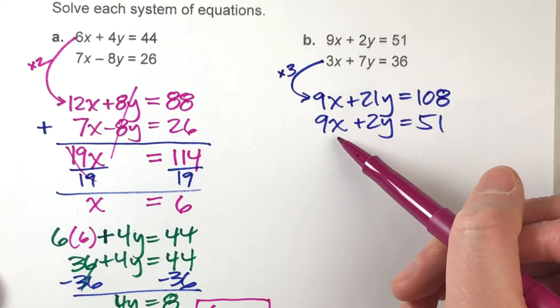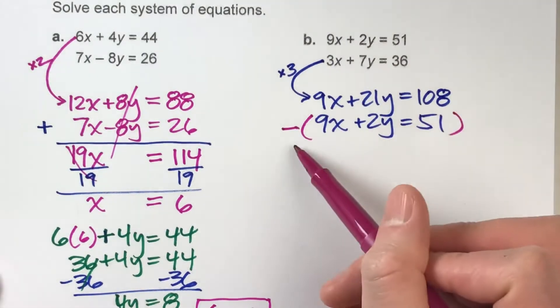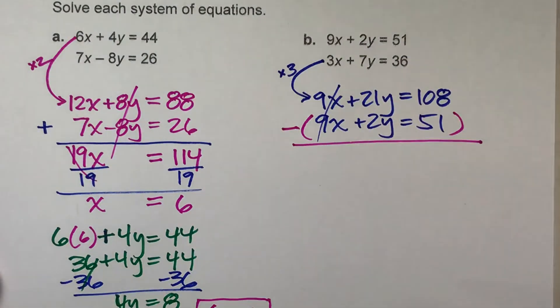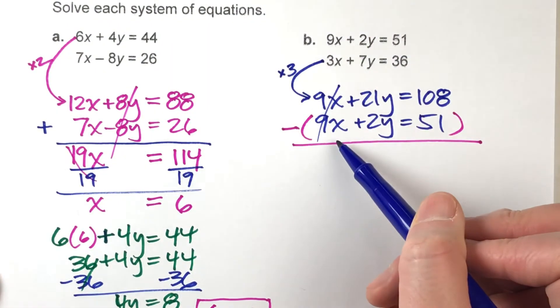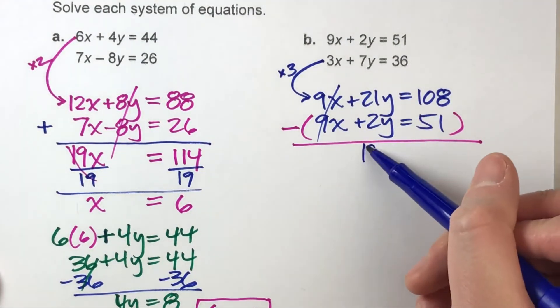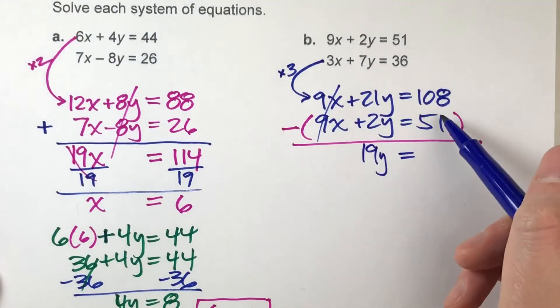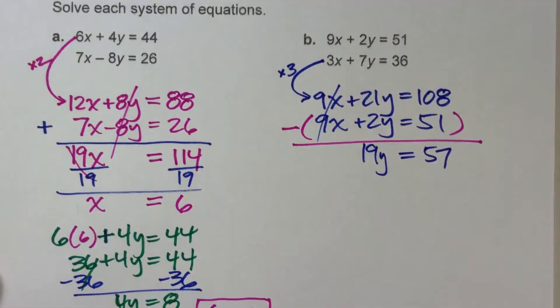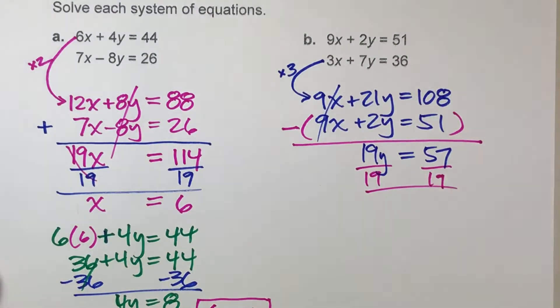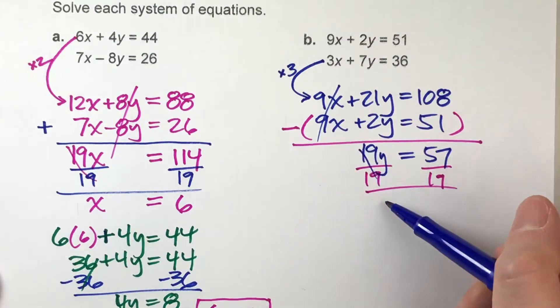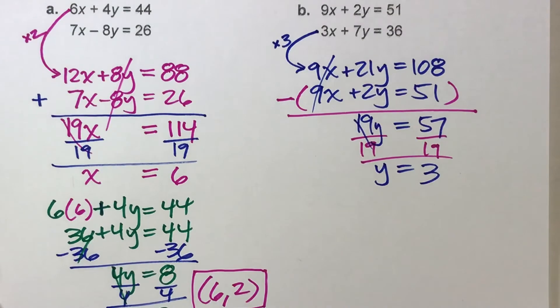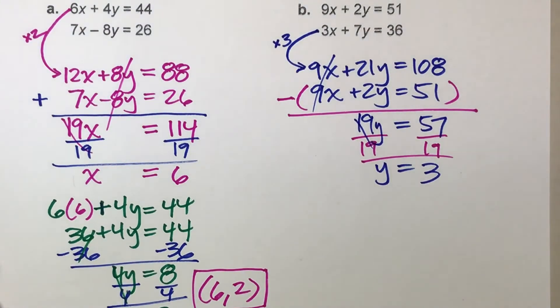Now in this situation I've got positive 9X and another positive 9X, so I'm gonna actually subtract my equations here because that will eliminate all of my X's. 9X minus 9X is no X's, 21 minus 2 is gonna leave me with 19Y's, and 108 minus 51 is 57. Divide both sides by 19 and I should get Y equals 3.